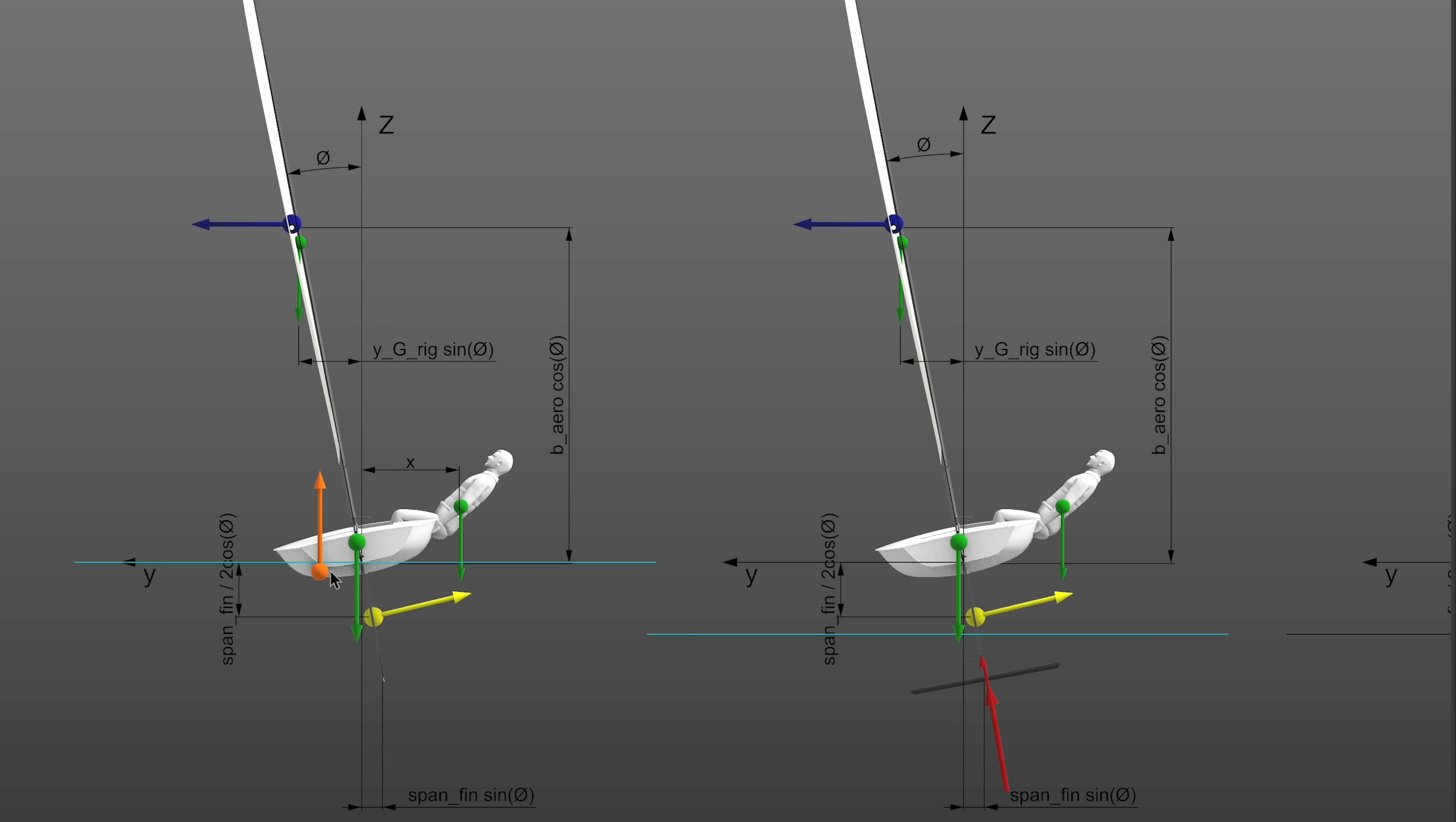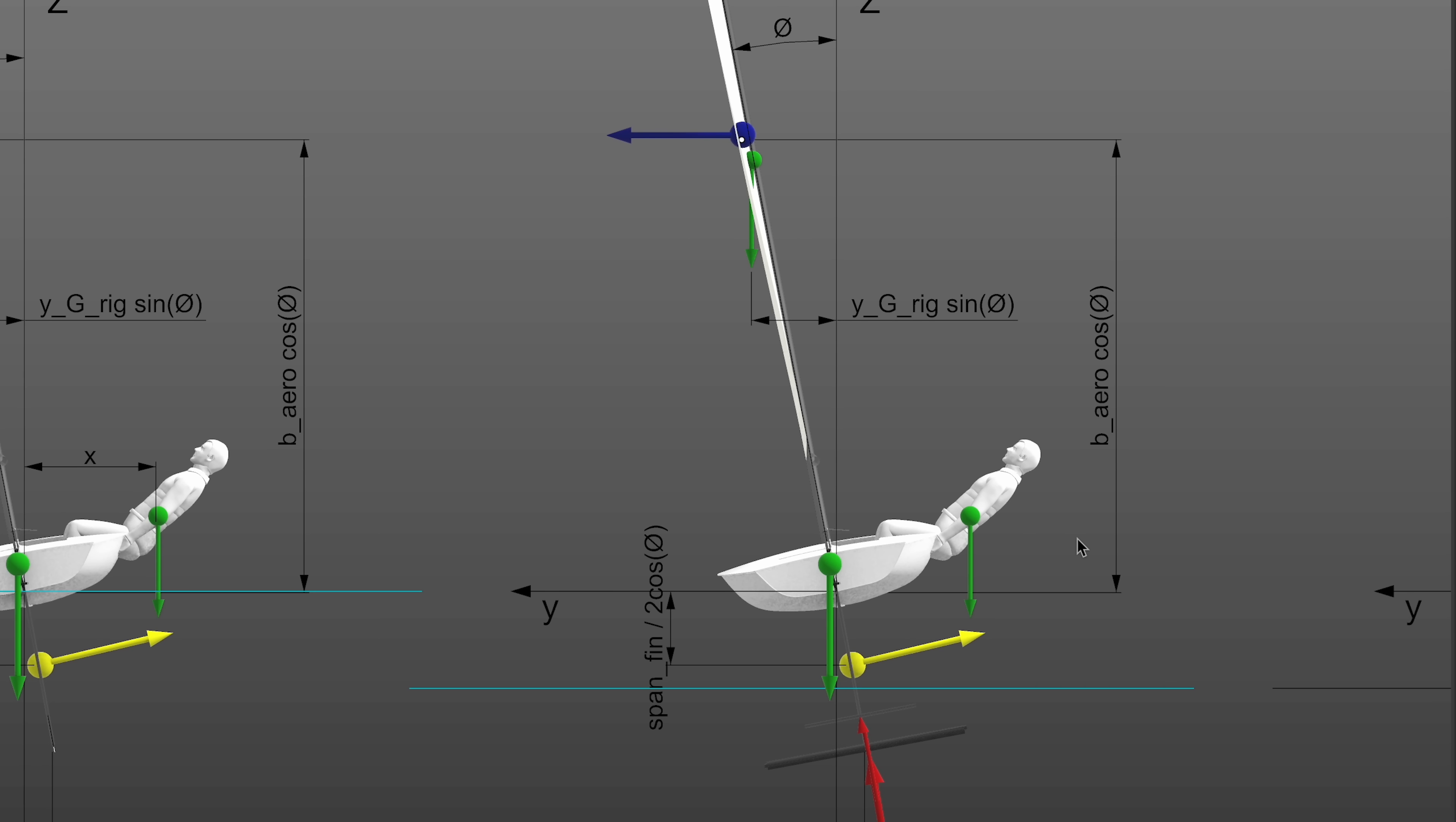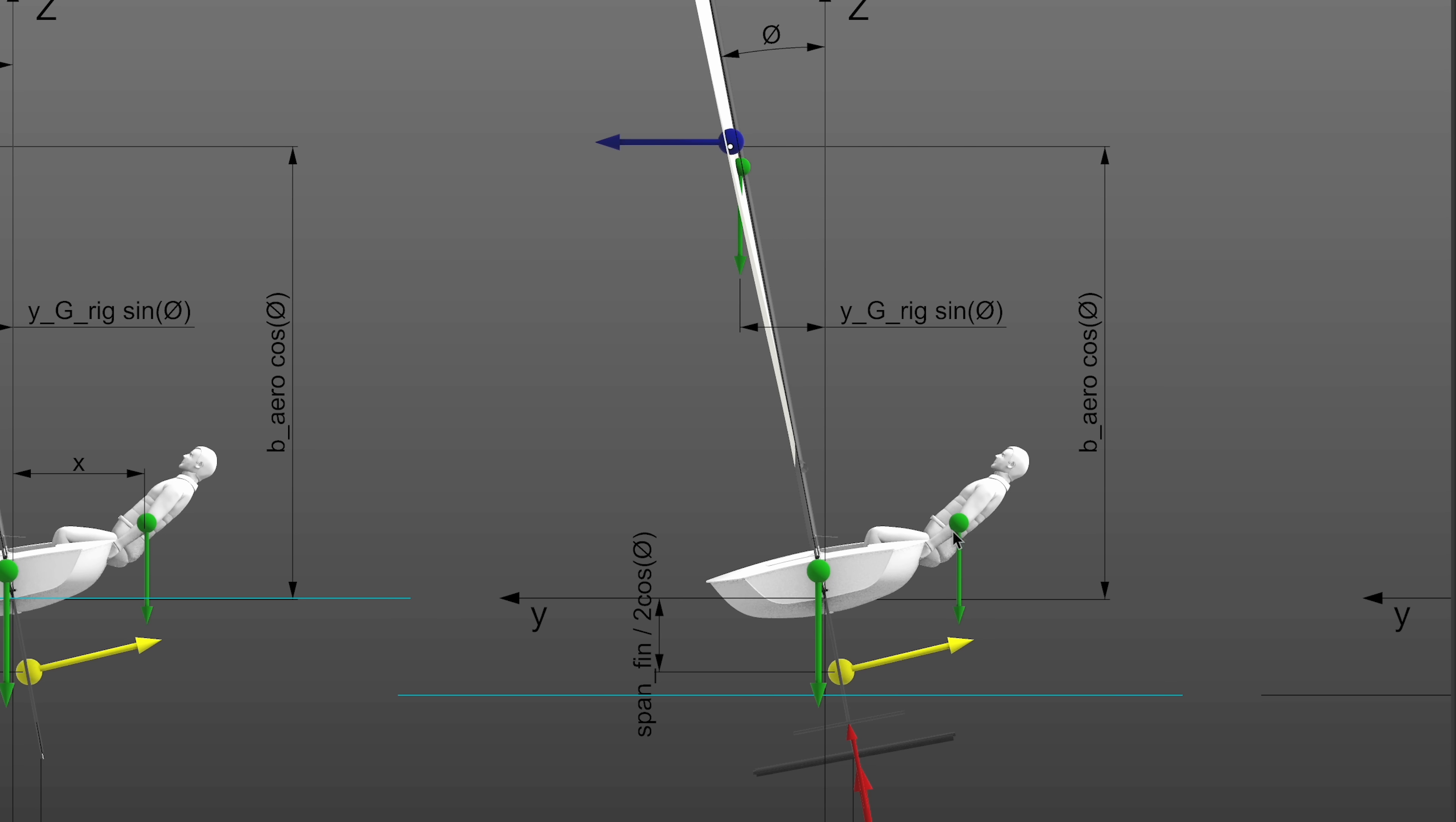In a T foiling boat, this restoring force is totally lost and the only force that keeps in equilibrium the boat is the weight of the sailor and the sail side force.